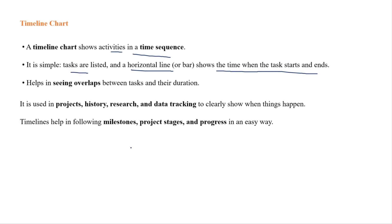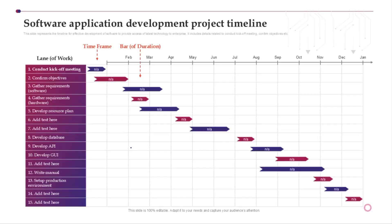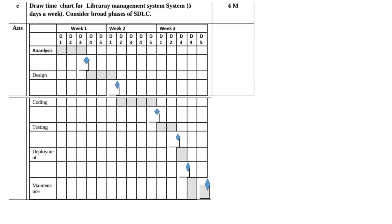The timeline chart shows activities in a time sequence. For example, for a library management system with five days a week, consider the broad phases of the software development lifecycle. First you have to gather the requirement, then design, then code, then test, then deploy, and then maintain.